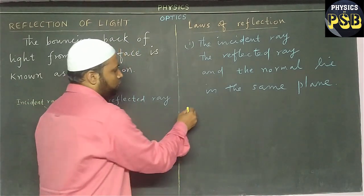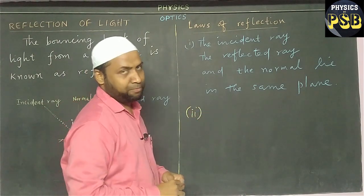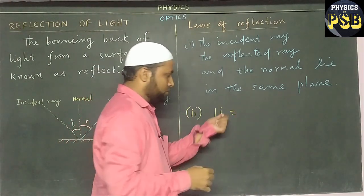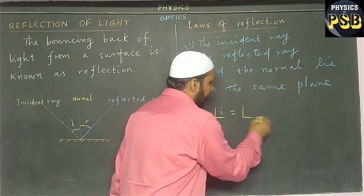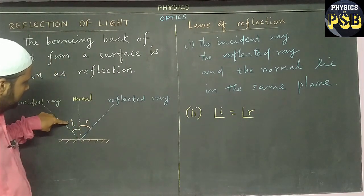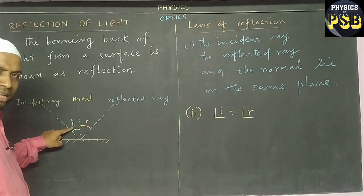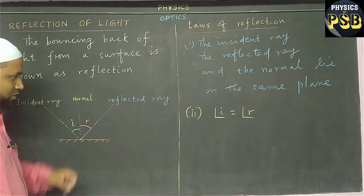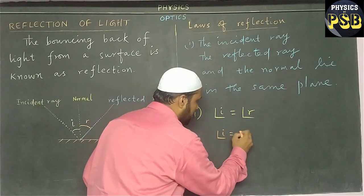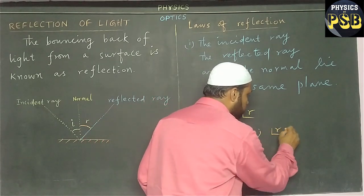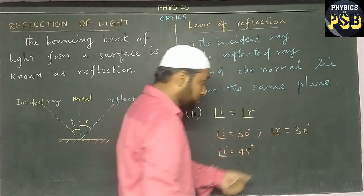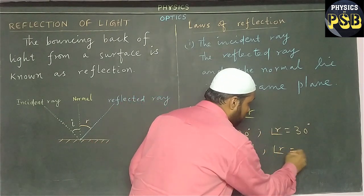Now, we will find out what the second law of reflection says. The second law of reflection says that the angle of incident, which is I, equals to the angle of reflection. You can see this from the diagram. Here, angle of incident is seen to be equal to angle of reflection. Suppose angle of incident is equal to 30 degrees. Then, angle of reflection will also be equal to 30 degrees. If angle of incident is 45 degrees, then angle of reflection will be equal to 45 degrees.